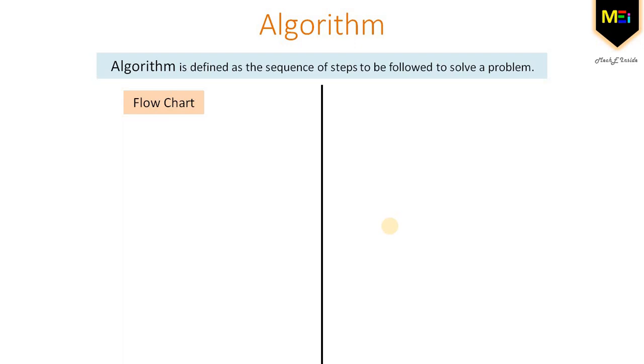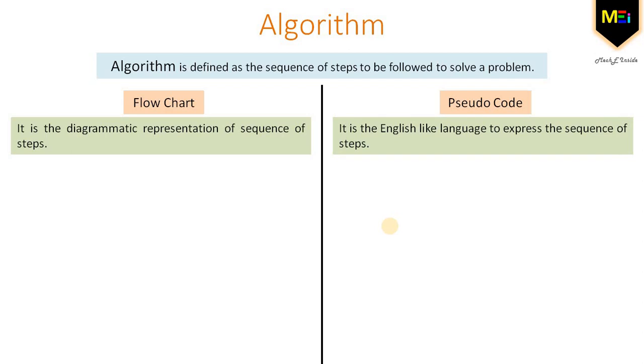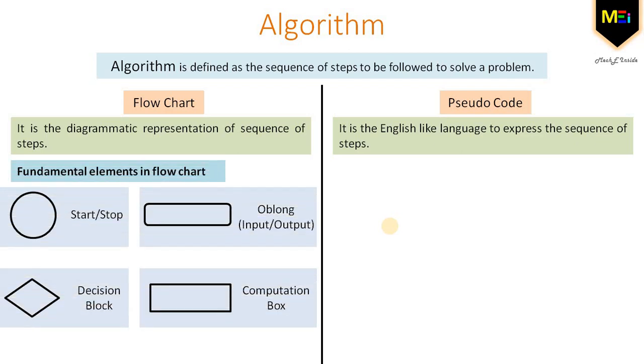There are many different ways of expressing an algorithm. We have two distinct ways to express an algorithm that are flowchart, which is the diagrammatic representation of sequence of steps, and pseudocode, which is the English-like language to express the sequence of steps. As flowchart is the diagrammatic representation of sequence of steps, there are some fundamental elements in flowchart. The circle is used for start and stop of program. The oblong shape is used for input from the user and output given by the display. The decision block is used for some conditional statements. The rectangle is used for the computation box.